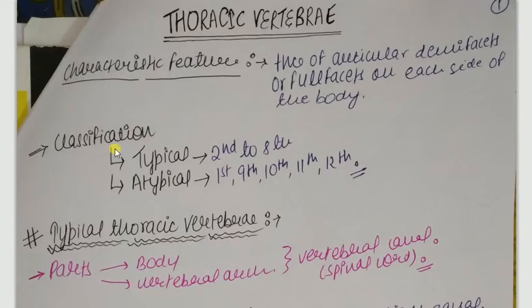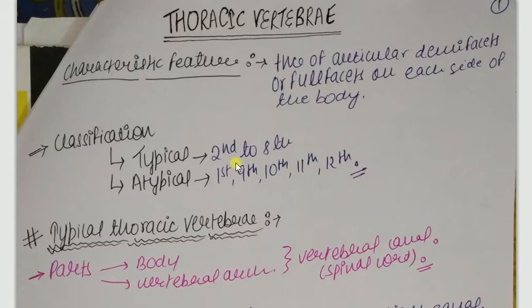Thoracic vertebrae are classified into two groups: typical thoracic vertebrae and atypical thoracic vertebrae. Typical thoracic vertebrae are the 2nd to 8th, and atypical thoracic vertebrae are the 1st, 9th, 10th, 11th, and 12th. Typical thoracic vertebrae means all these vertebrae have the same general features.